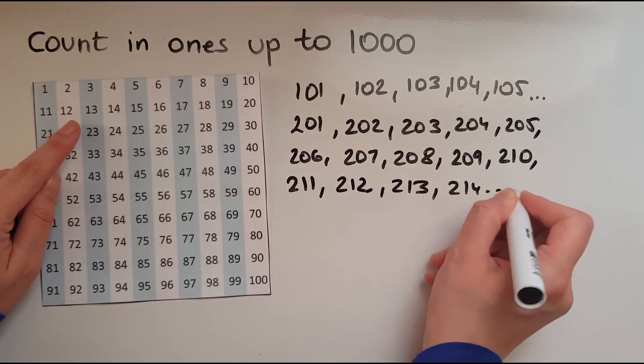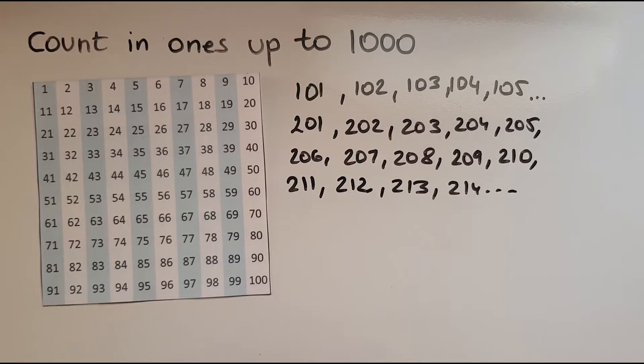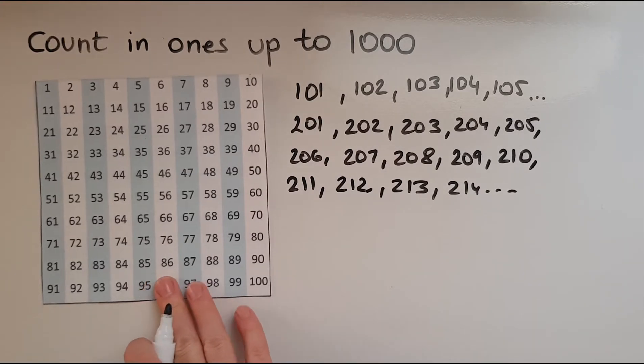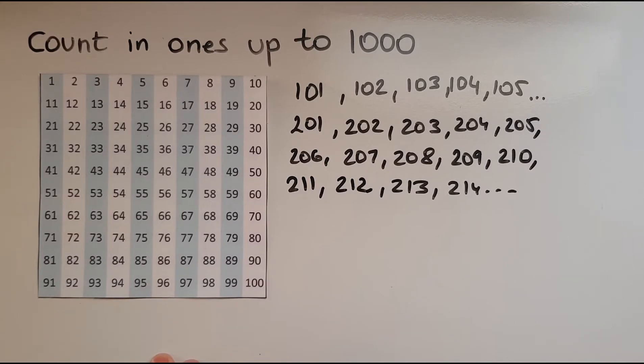When we reach the 300s, then we start again. 301, 302, 303, up to 400, then 401, 402, 403, then we go to 500, 600, 700, 800, 900 and finally 1000.